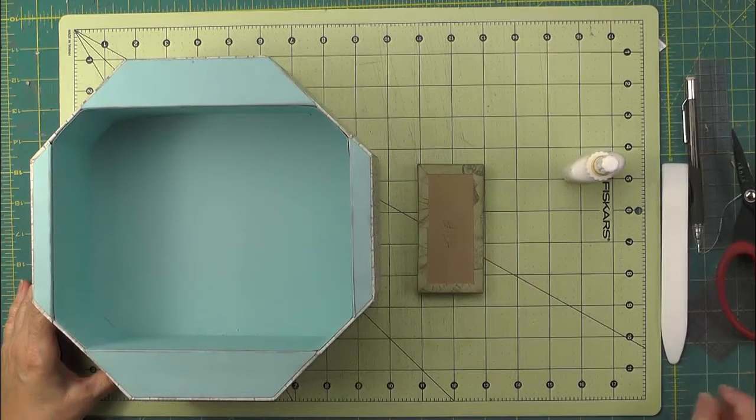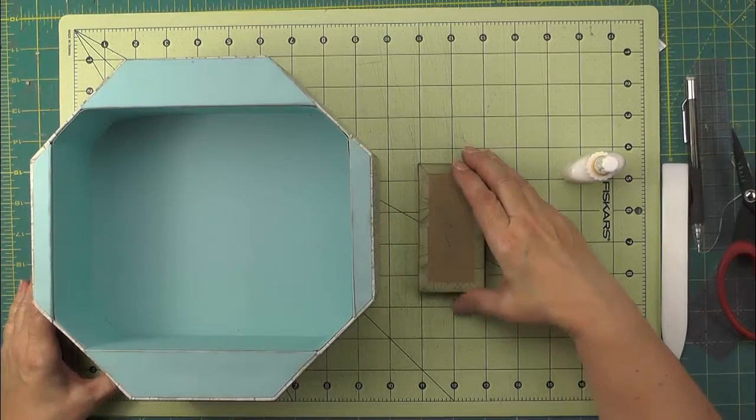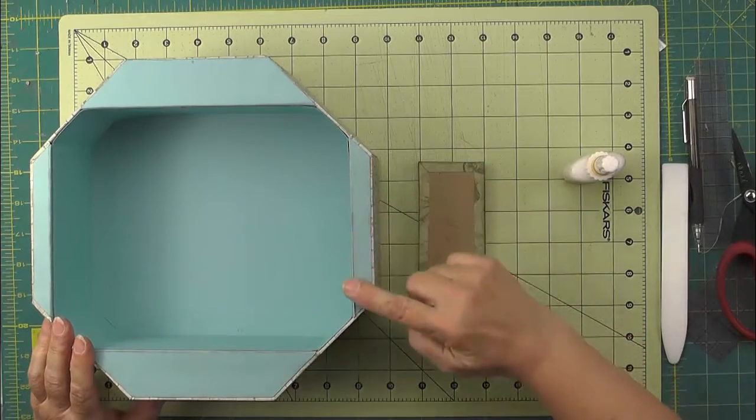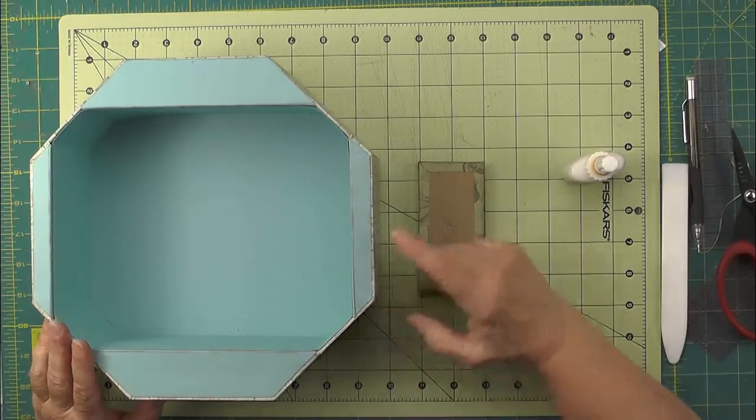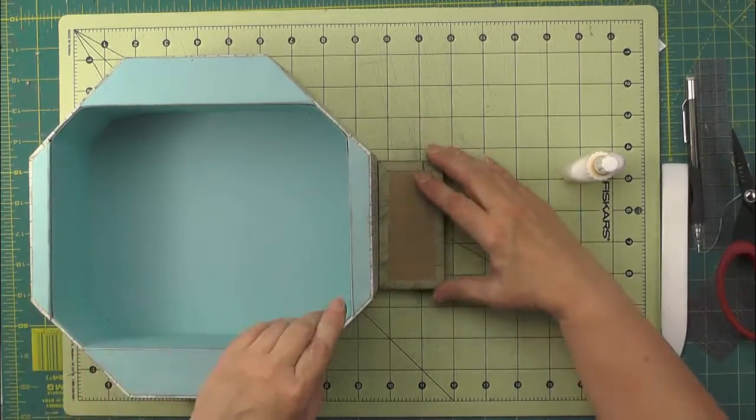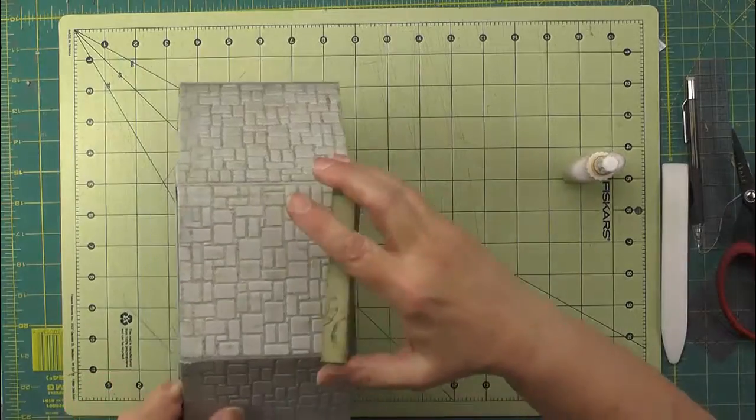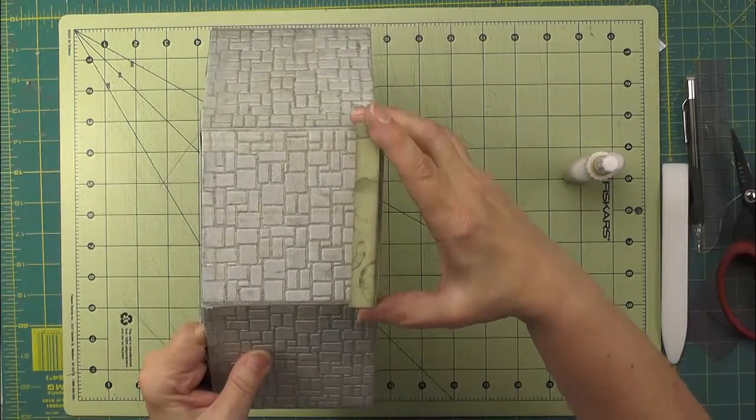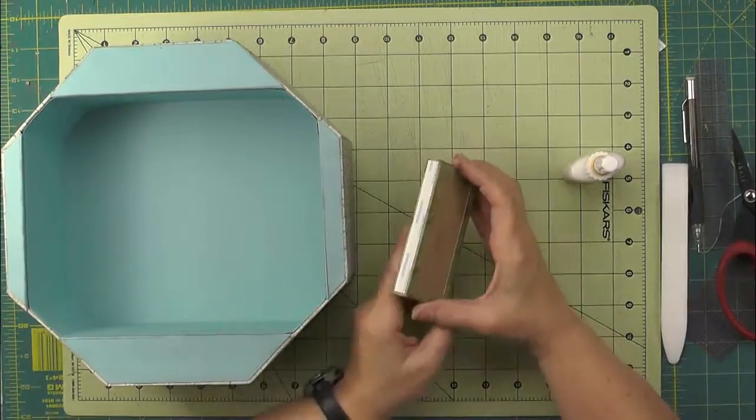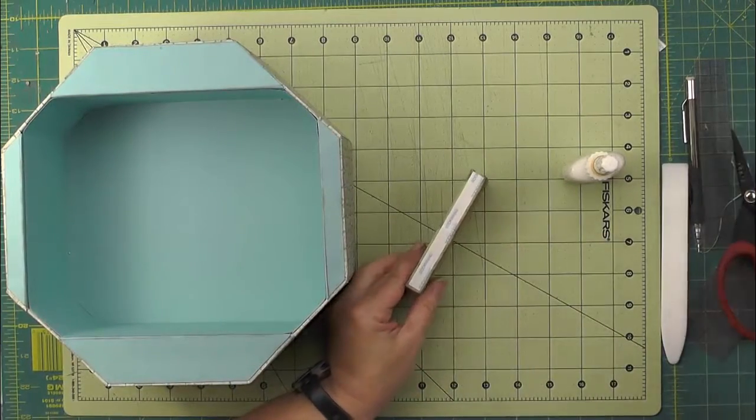And now we can attach our landing to the foundation. We want to attach it on one of the narrow sides here, and it is sized so it should fit exactly. It fits exactly in between that panel there. So I prepped my back edge with some score tape.